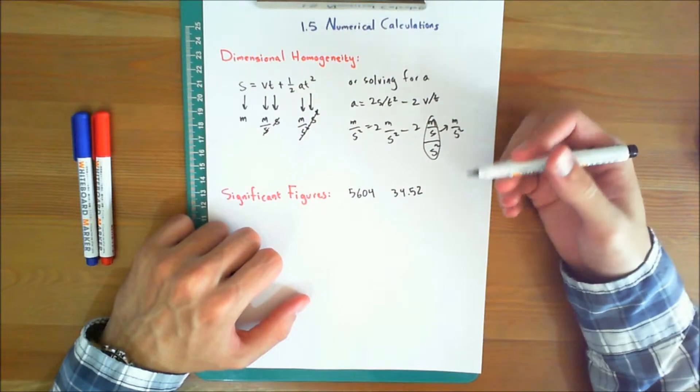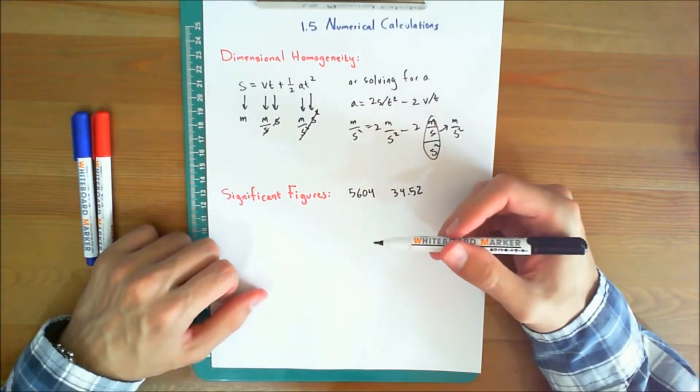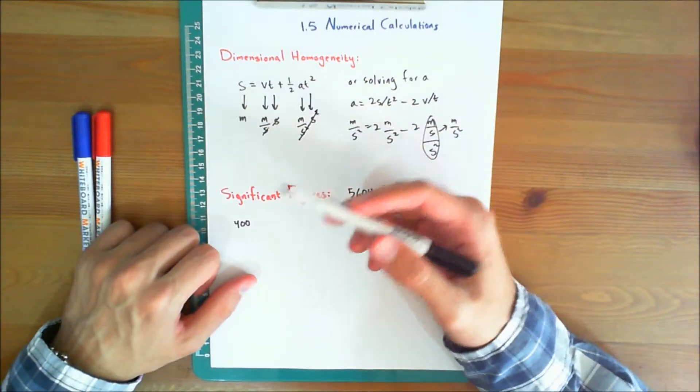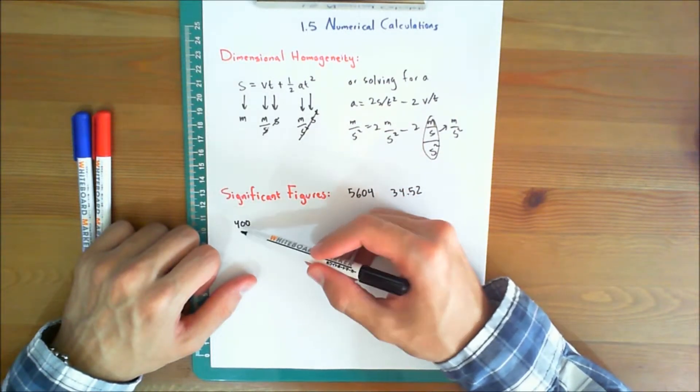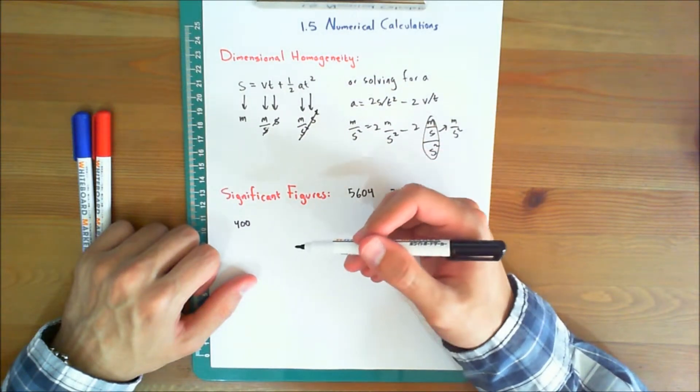When numbers begin or end with zeros, however, it is difficult to tell how many significant figures are in the number. Consider the number 400. Does it have 1, 4, 2, 40, or 3, 400 significant figures? In order to clarify this situation,